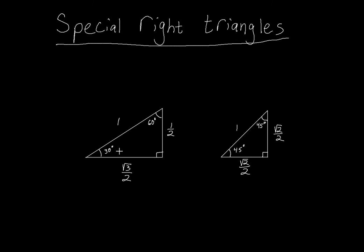If I were you, I would quickly jot these down. Once I get rid of them, you'll have to rely on your notes. So pause the video and jot these special right triangles down. Make sure you've got the hypotenuse of 1 on the 30-60-90 triangle — the side opposite 30° is 1/2, opposite 60° is √3/2. On the 45-45-90 triangle with hypotenuse 1, both side lengths are √2/2.